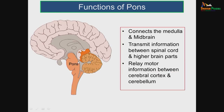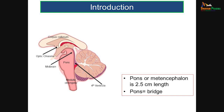The pons is a bridge between the midbrain and the medulla. It transmits information from the spinal cord to the higher parts of the brain and acts as a motor relay station for motor information between the cortex and the cerebellum. Pons means a bridge. It is almost 2.5 centimeters in length and is also called the metencephalon.